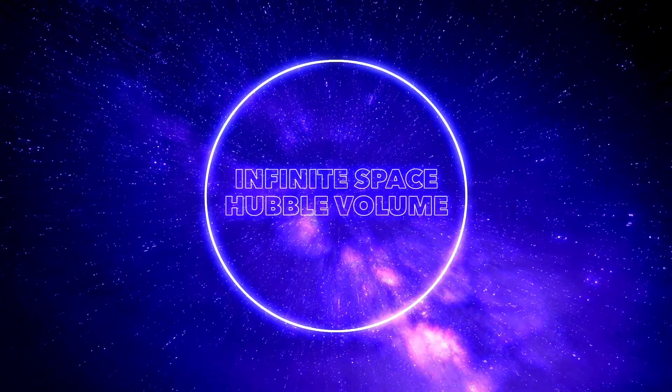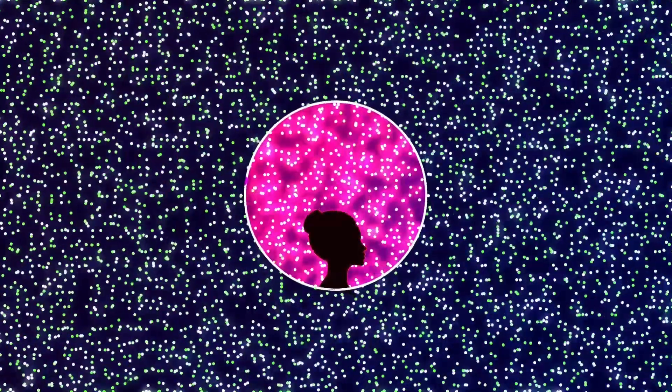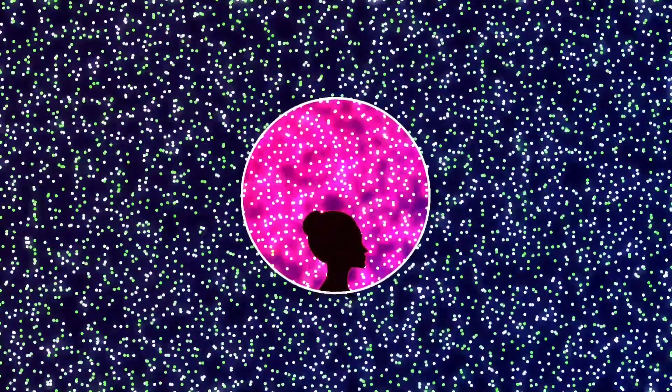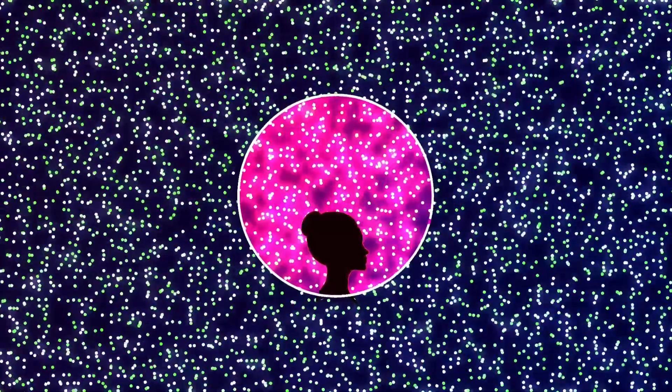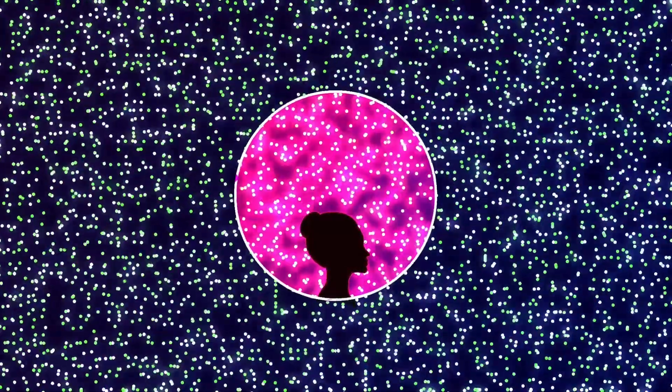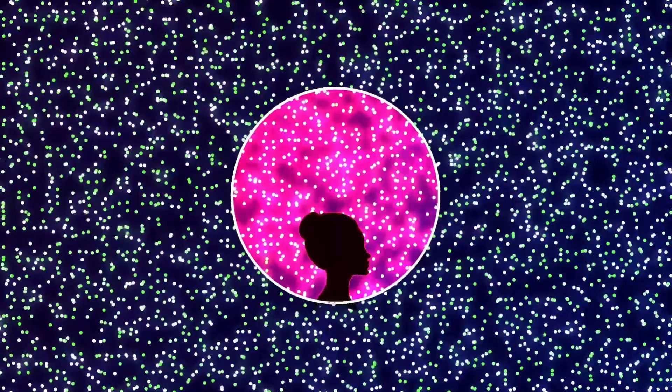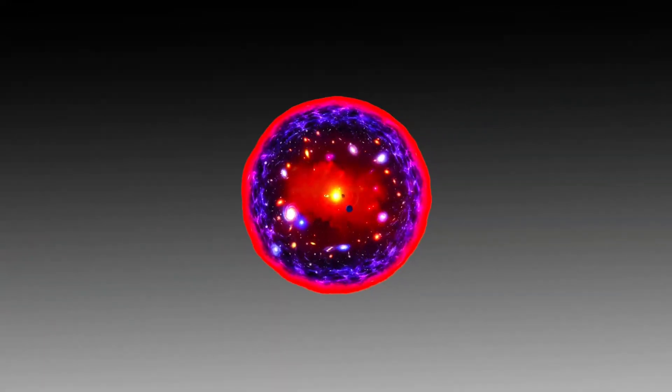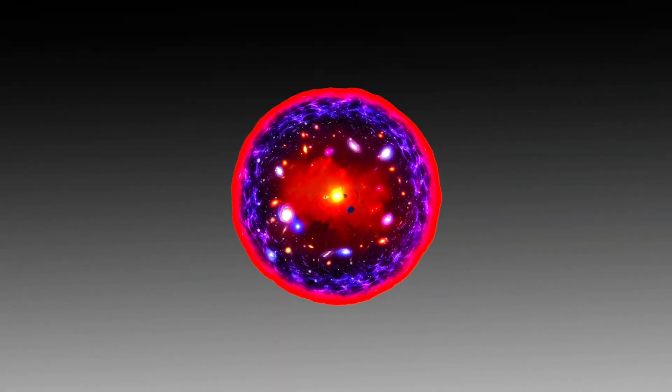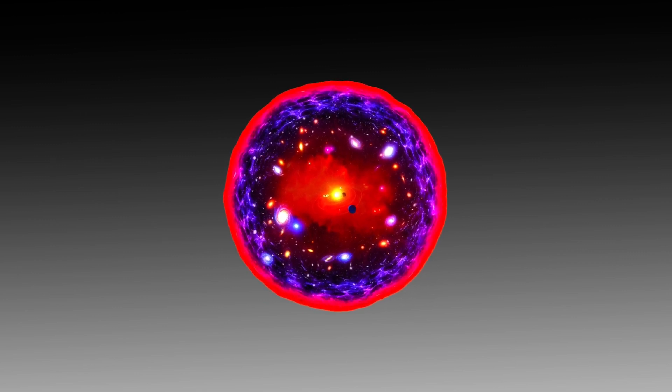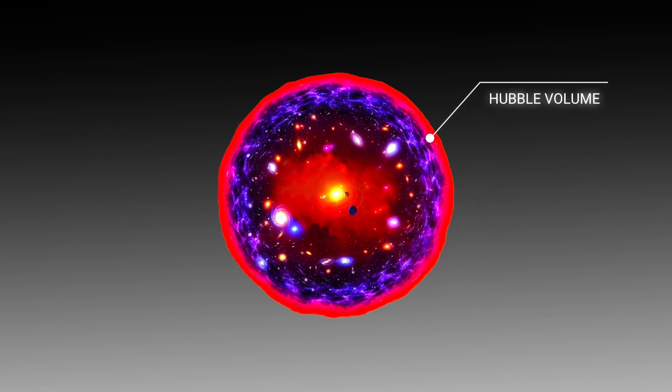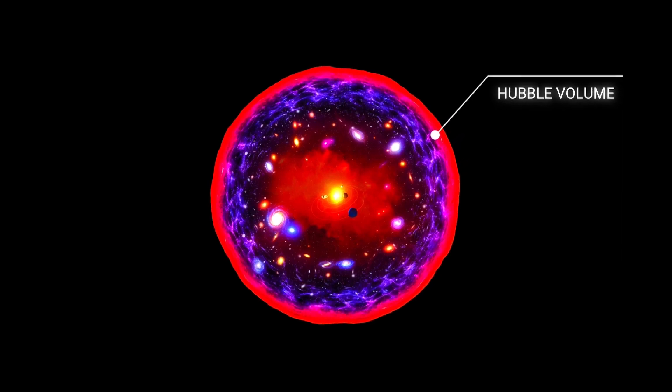Infinite Space with Hubble Volume. Since we can only see things when the light they emit or reflect reaches us, we can never see further than the farthest distance light can travel in the time the universe has existed. That means our observable universe keeps getting bigger, but it is finite. This finite amount is referred to as the Hubble Volume. We will never be able to see beyond the Hubble Volume.